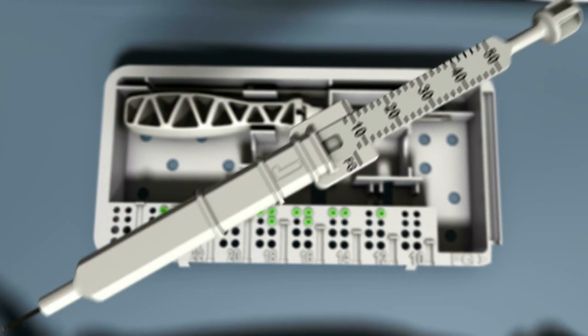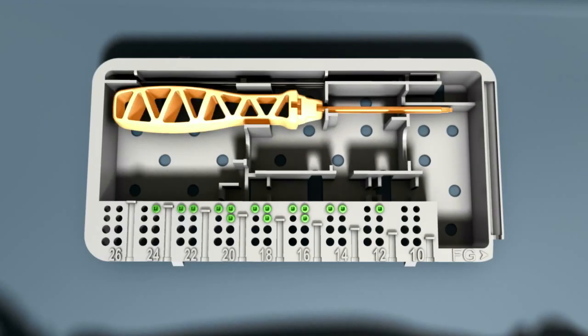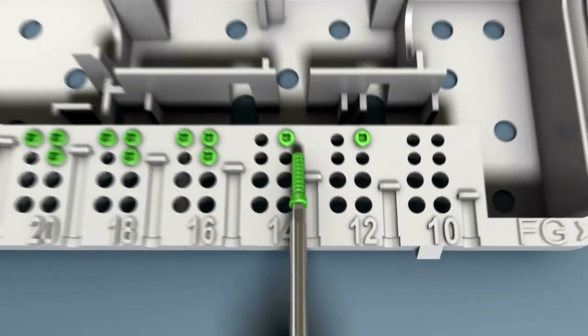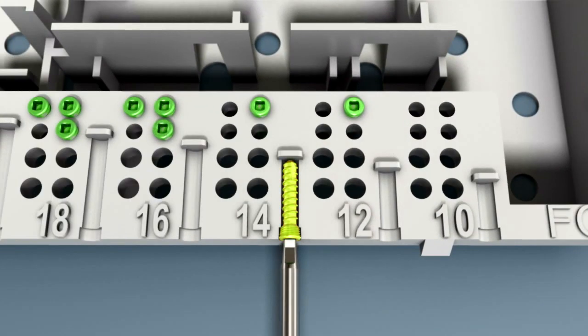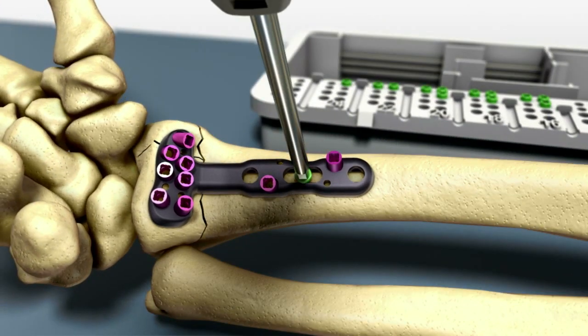The depth gauge can be used to verify screw length required. When using the depth gauge in a hole without a fast guide insert, read the length from the non-FG mark on the depth gauge. When selecting screws in the diaphysis, the surgeon may round up 1 to 2 millimeters to ensure bicortical screw purchase. Use the driver to pick up the selected screw in the pack.